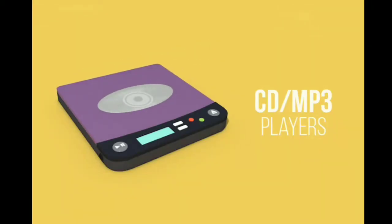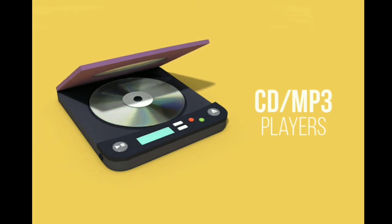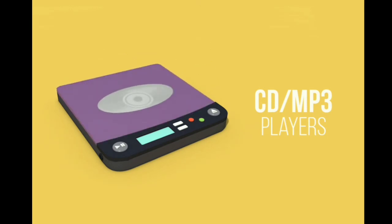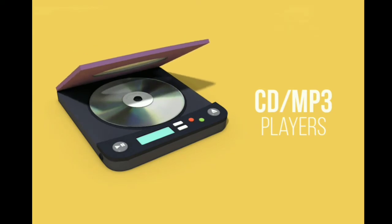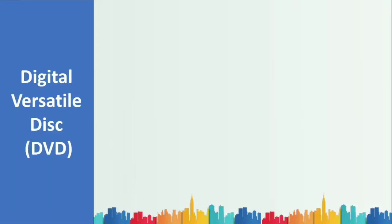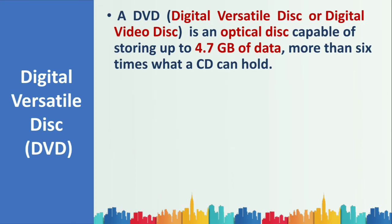The CD is placed inside a CD player, and the motor within the player rotates the disk to read the data. A DVD — Digital Versatile Disk — is similar to a CD but is an optical disk capable of storing up to 4.7 GB of data, which is more than six times what a CD can hold.